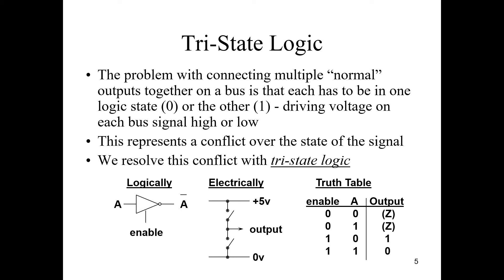If you see the diagrams here, logically it will be like a diode. A, we get output A bar, and we have another input called enable. Electrically here we are given zero volts, plus five volts, and the output. In the truth table, we have two inputs: enable and A. When enable is zero, we get high impedance states represented with Z. When enable is one, the output follows the input.